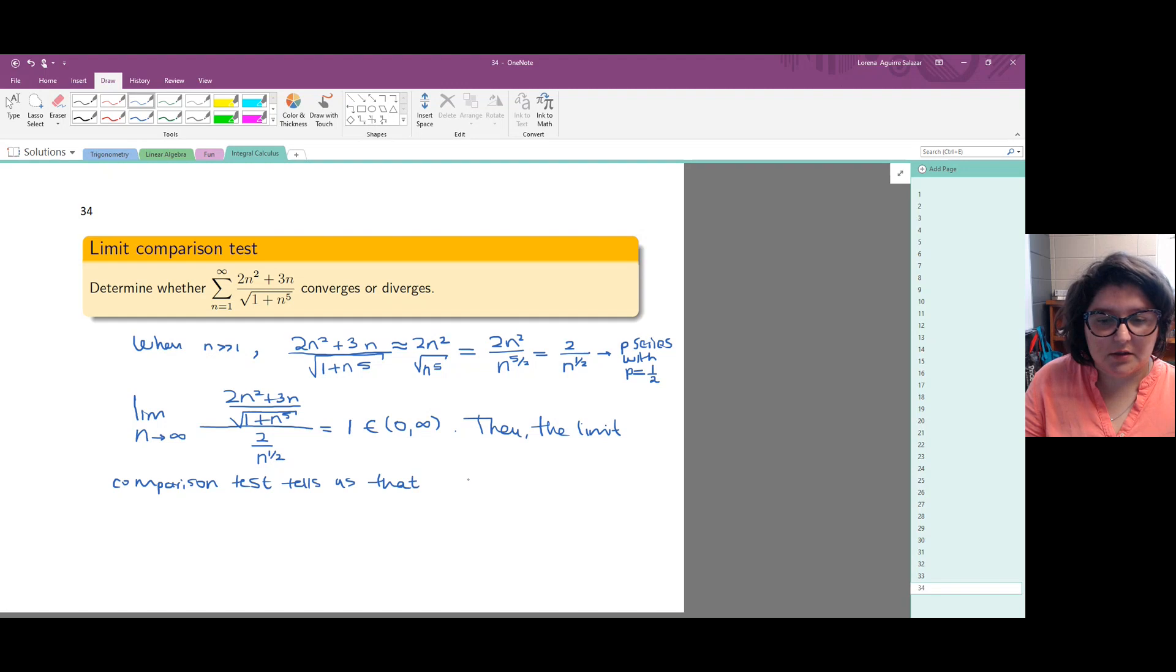And because this series with 2 over n to the 1 half diverges because that's a p series with p equals 1 half, then we can say that our series diverges.